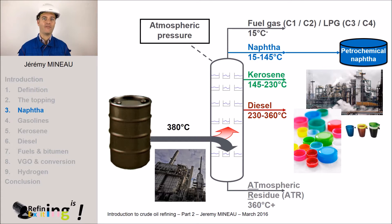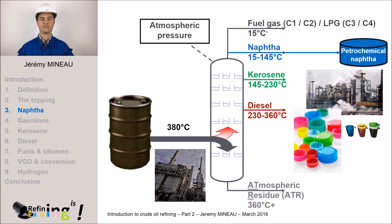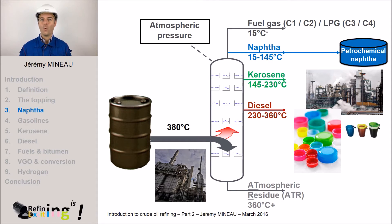Generally speaking, a refinery is located close to a steam cracker, and there are synergies of raw materials and energy between both plants. However, the refinery might not be located close to a steam cracker. In that case, what can we do with these molecules between 4 and 10 atoms of carbon? We are going to produce gasoline.